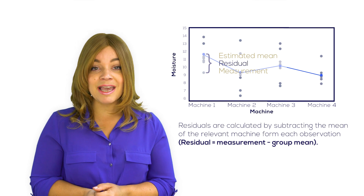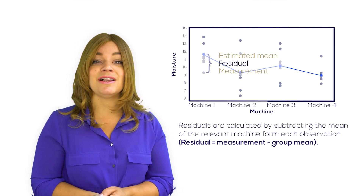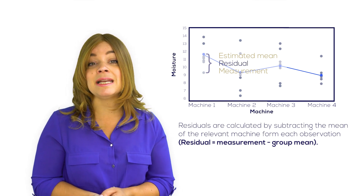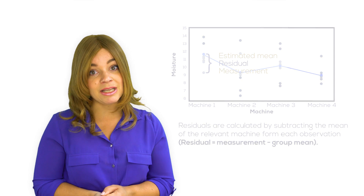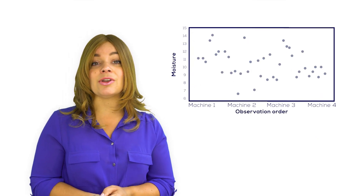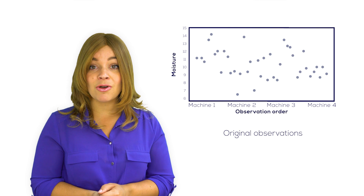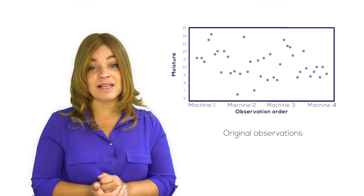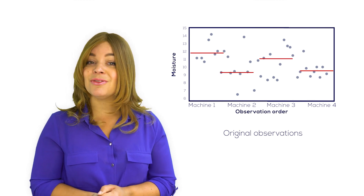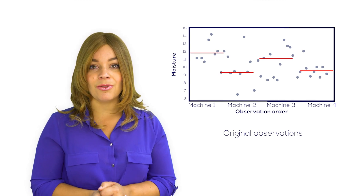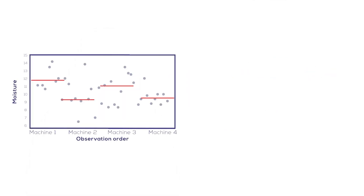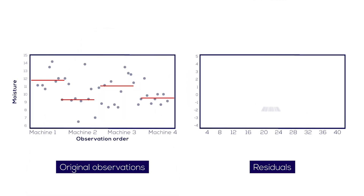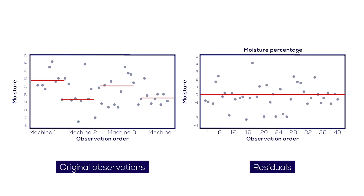In the case of ANOVA, the expected value is the mean output over the relevant machine. Our categorical variable has four different groups and the red lines are the group means. Then the residuals will look like this, with the mean of the residuals equal to zero by construction.